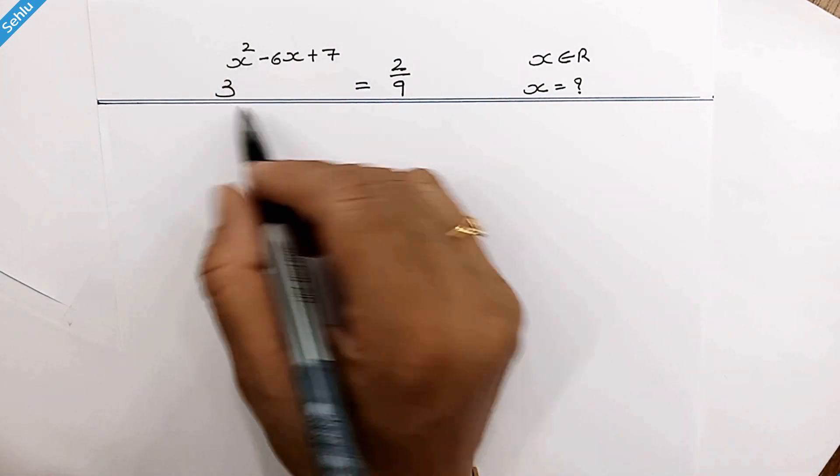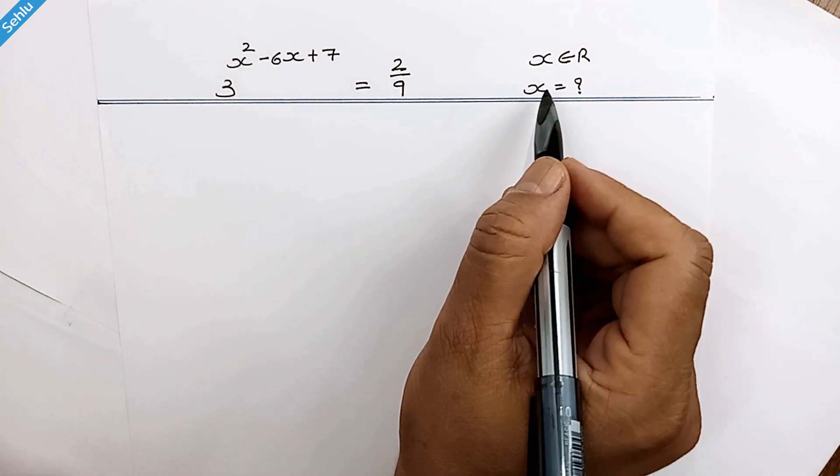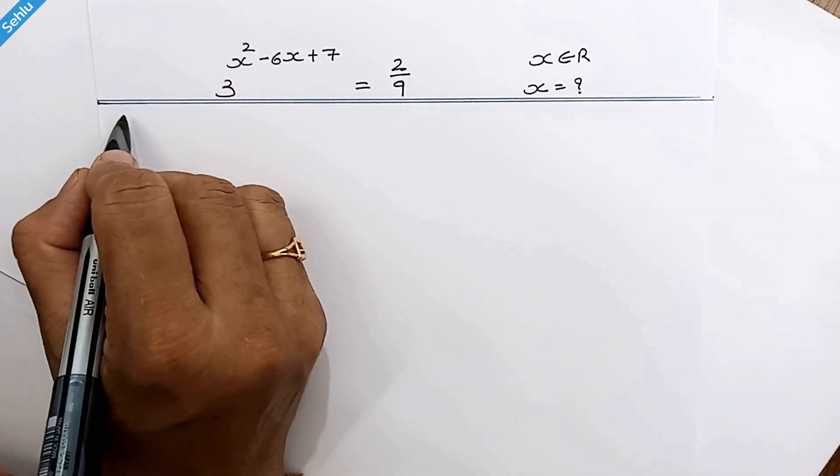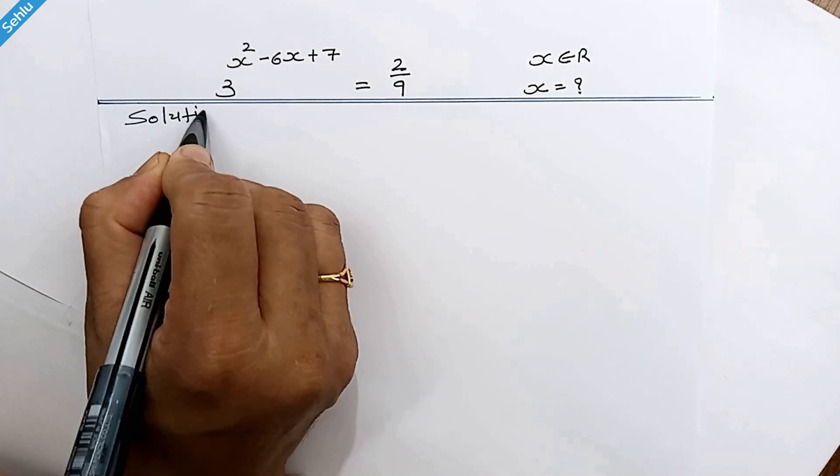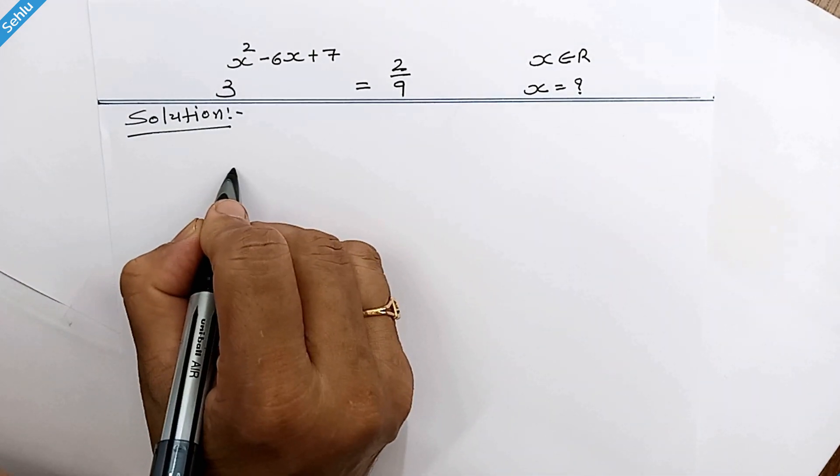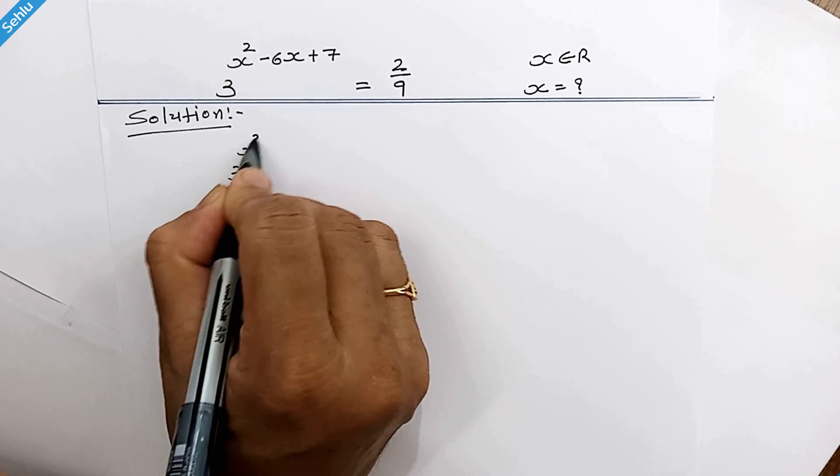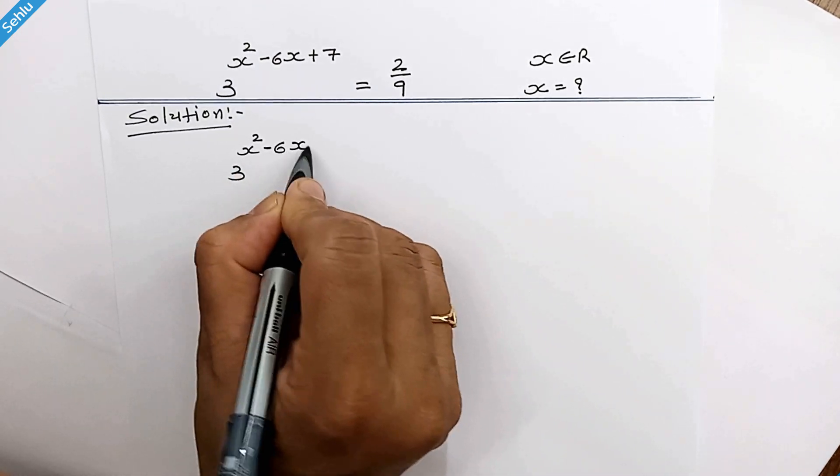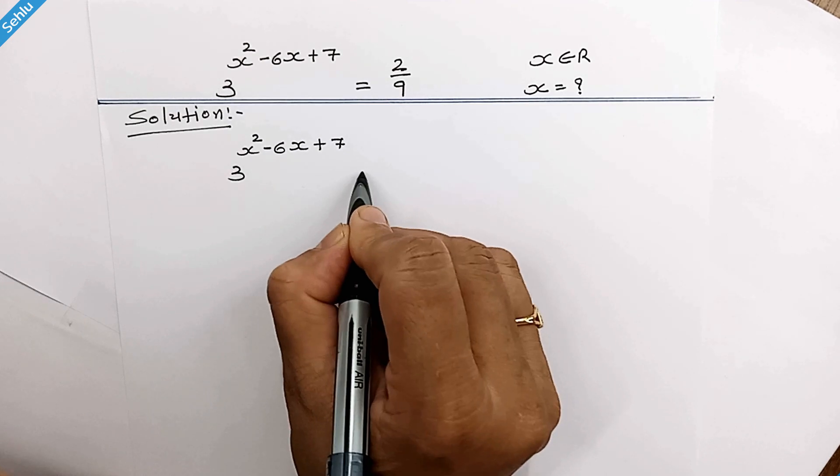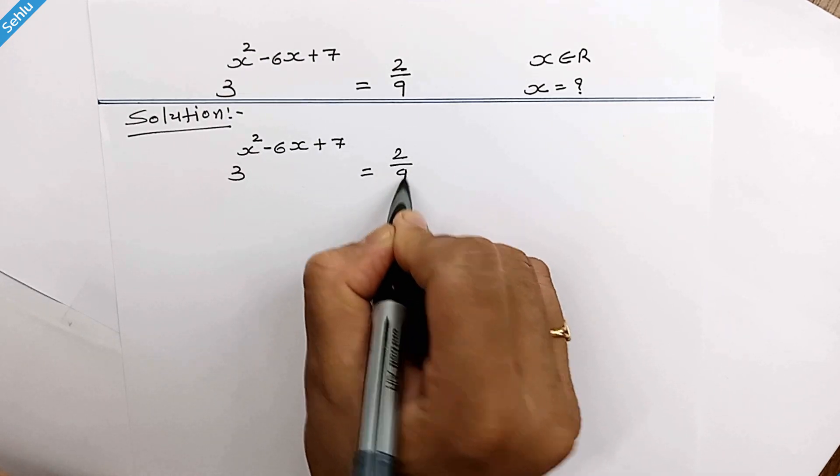Hello friends, this is our question and we need to find the real value of x. Let's begin. The question is 3 to the power x² minus 6x plus 7 equals 2 over 9.